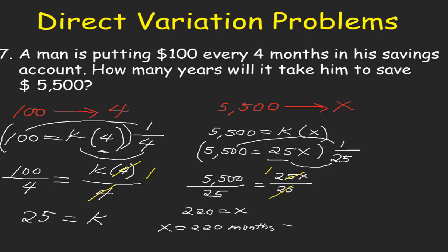To find for the number of years, we take 220 months divided by 12, because there are 12 months in a year. So 220 divided by 12 gives us 18.33 years. So it will take 18.33 years for the man to save $5,500.